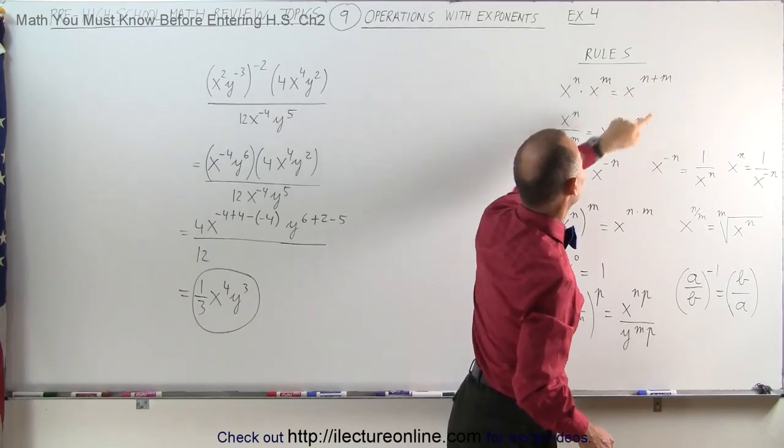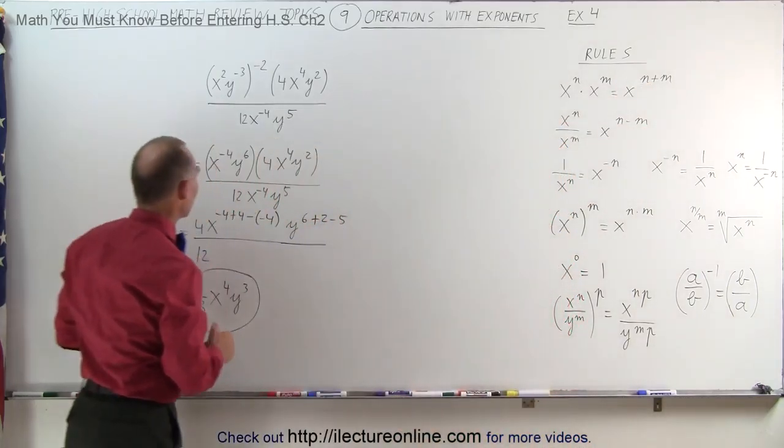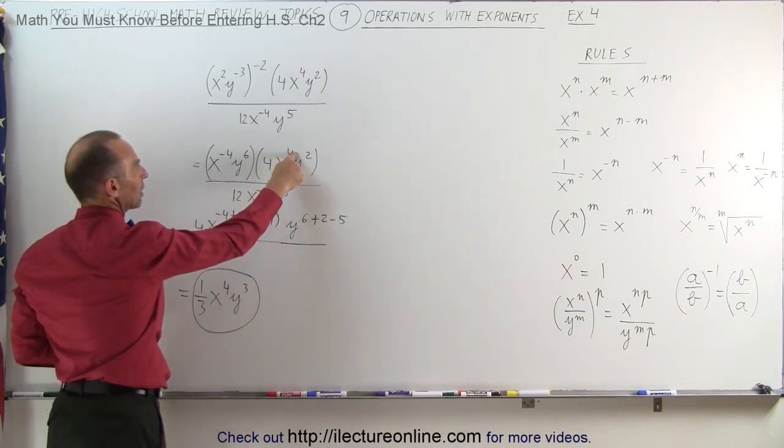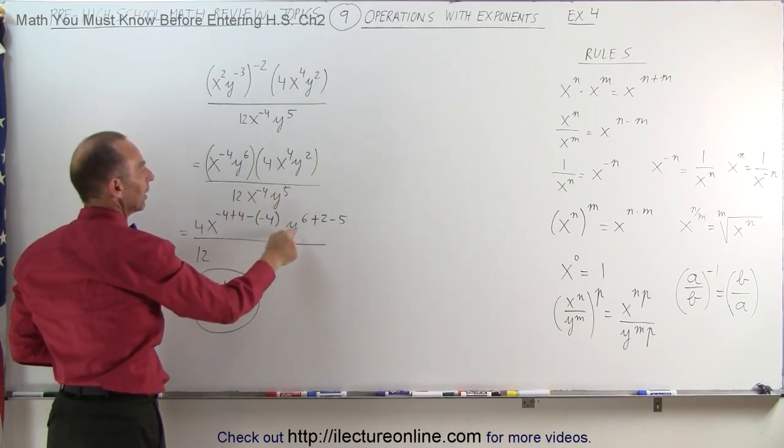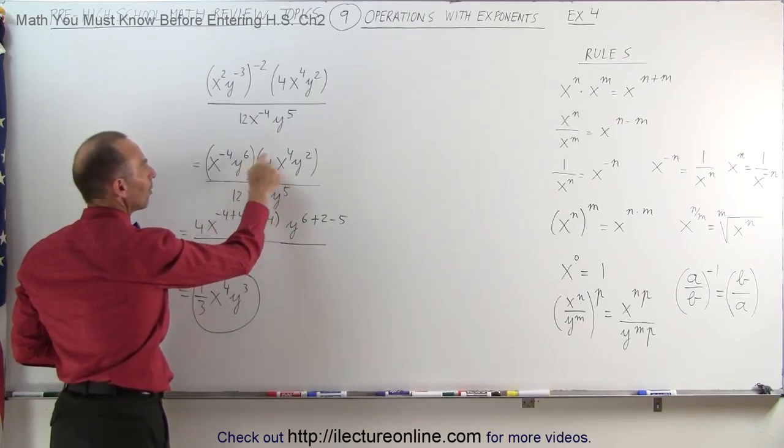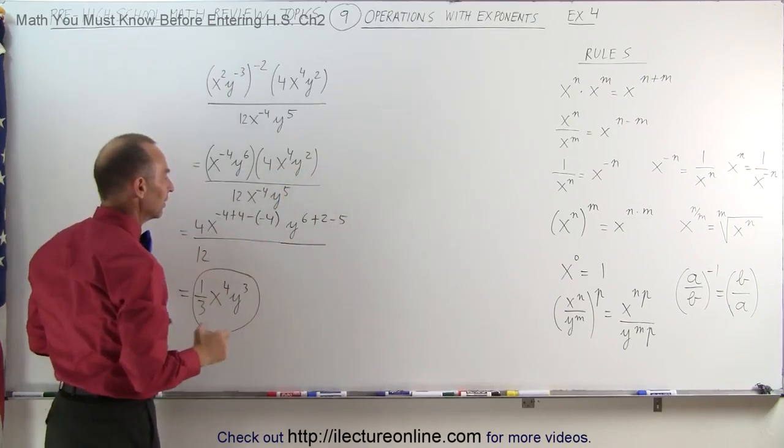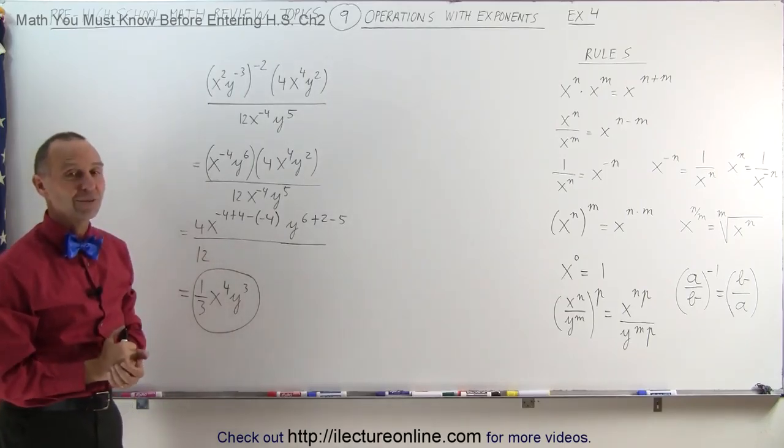When we divide, we subtract exponents. So here we have x⁻⁴. We add the plus 4 here and subtract the negative 4 because it's in the denominator. Here we have y⁶⁺²⁻⁵. Simplifying that, you get the final result. And that's how it's done.